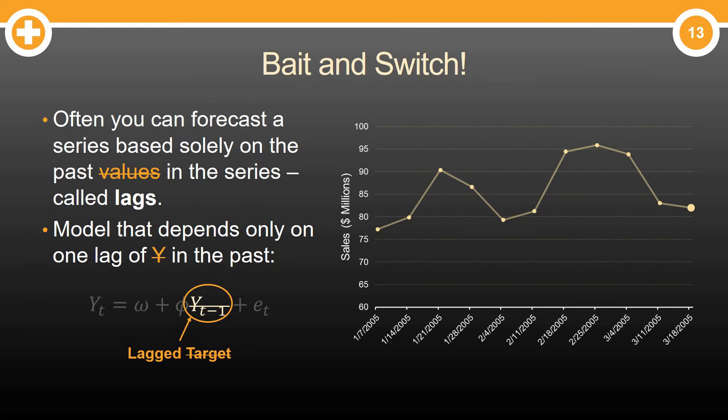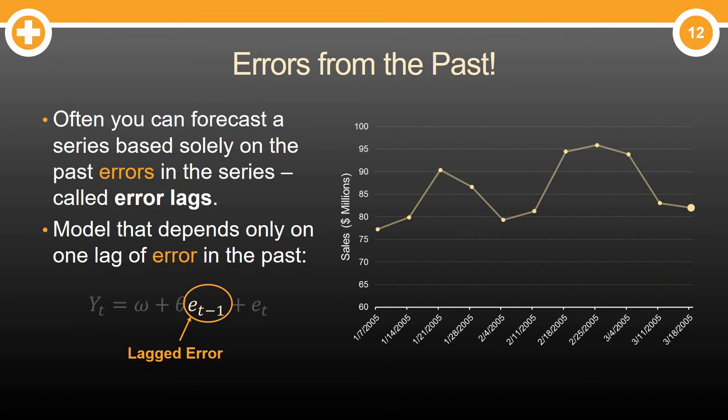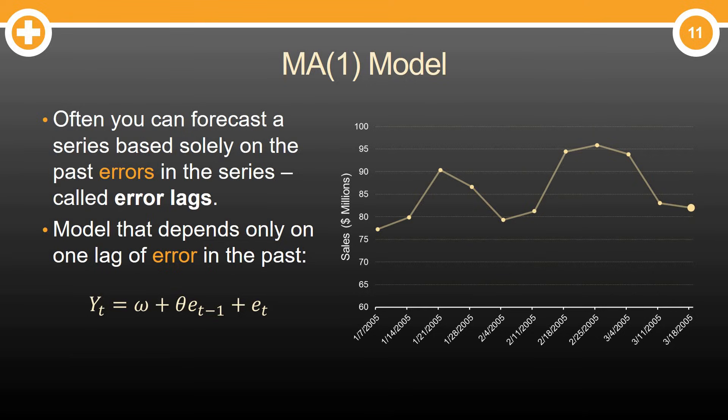Except instead of looking at previous values of Y, we're going to switch it up a little bit. We are instead going to look at previous errors. Essentially, errors from the past. We call these error lags. And really, our model now depends not on previous values of Y, but these previous errors that exist across time. That's what we call the moving average model.